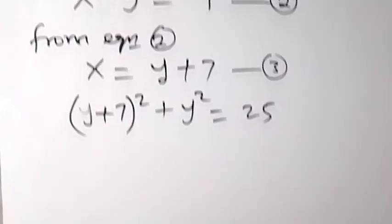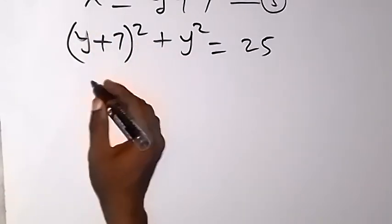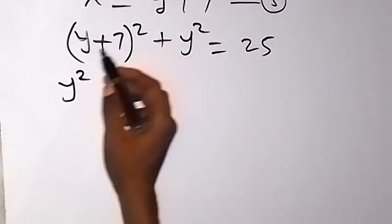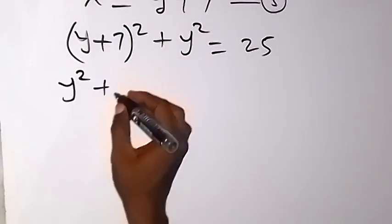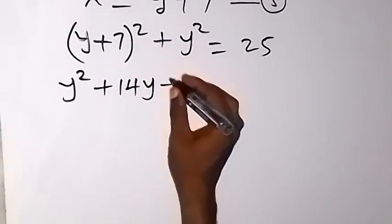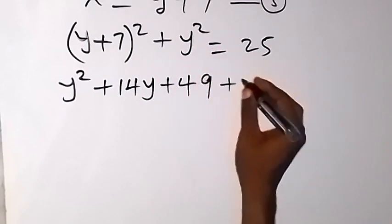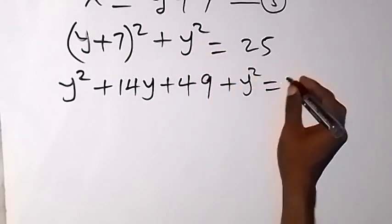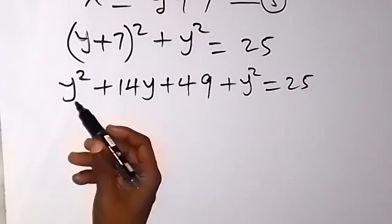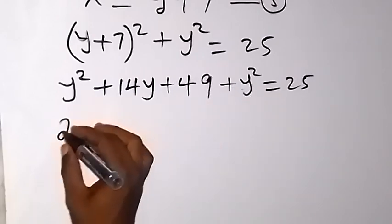From there, we can solve this. When we open this bracket, y squared, we have y squared. Then 2 times y times 7, that is plus 14y. Then 7 squared, that is plus 49. Then we have this y squared plus y squared equals 25. We collect like terms. Y squared plus y squared, when we add them together, gives us 2y squared.